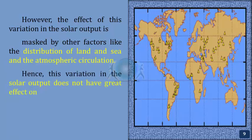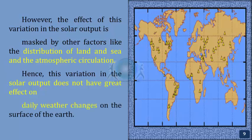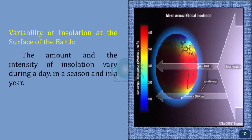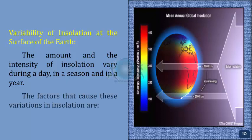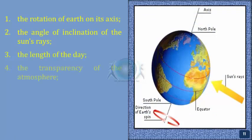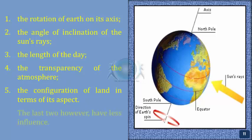Hence, this variation in the solar output does not have a great effect on daily weather changes on the surface of the Earth. Variability of insolation at the surface of the Earth — the amount and intensity of insolation vary during a day, in a season, and in a year. The factors that cause this variation are the rotation of the Earth on its axis, the angle of inclination of the Sun's rays, the length of the day, the transparency of the atmosphere, and the configuration of land in terms of its aspect. The last two, however, have less influence.